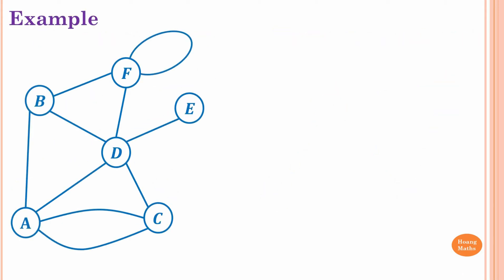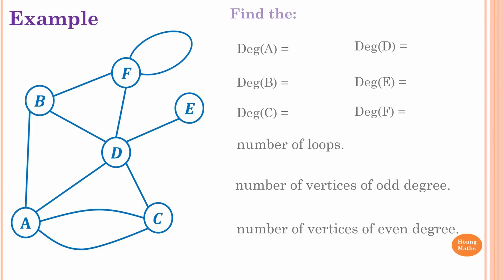Let's look at this example. To find the degree of A, we count the edges around it: one, two, three, four — so the degree of A is four. For vertex B, we have one, two, three — so the degree of B is three.